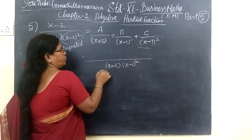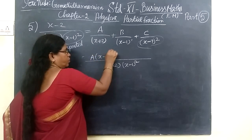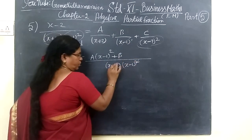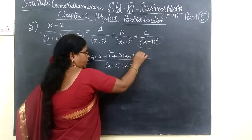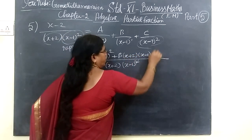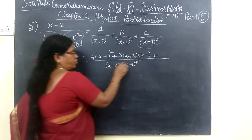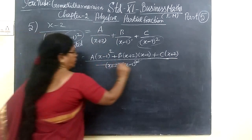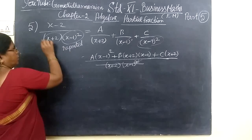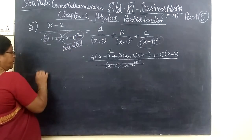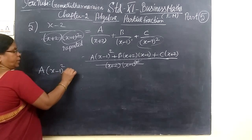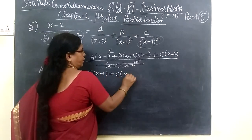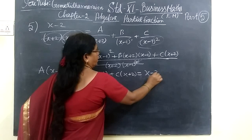So you write S minus 2, and S minus 2 is getting cancelled. So S minus 1 whole square remains. Plus B is written here — this one is getting cancelled. It should be written as: A by X plus 2, then S minus 1 to power 1. Then B by power 2 which is S minus 1 whole square. And C is written as X plus 2, with S minus 1 whole square, so this equals X minus 2.